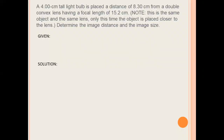In this video we're going to talk about a convex lens problem. A 4 cm tall light bulb is placed a distance of 8.3 cm from a double convex lens having a focal length of 15.2 cm. Note, this is the same object and the same lens, only this time the object is placed closer to the lens.